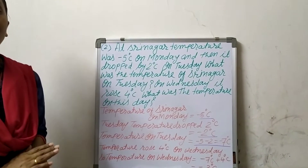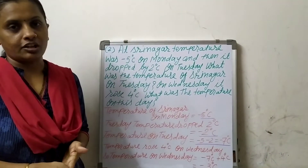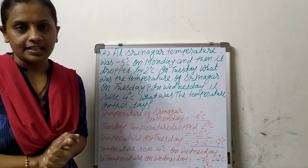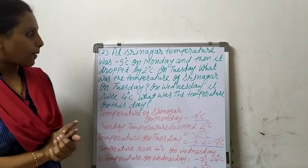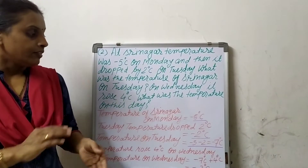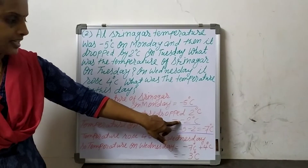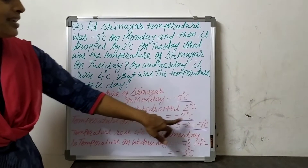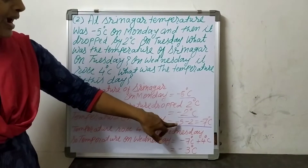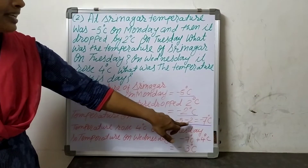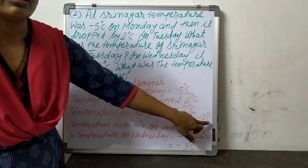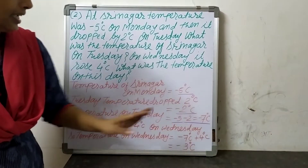Here we have to find out temperature on Tuesday and temperature on Wednesday. On Monday it is minus 4 degree centigrade. On Tuesday it dropped by 2 degree centigrade. When it is dropped, we use negative integer for temperature. So on Tuesday it is minus 2 degree centigrade. Minus 5 on Monday, minus 2 on Tuesday. So temperature on Tuesday is equal to minus 7 degree centigrade.